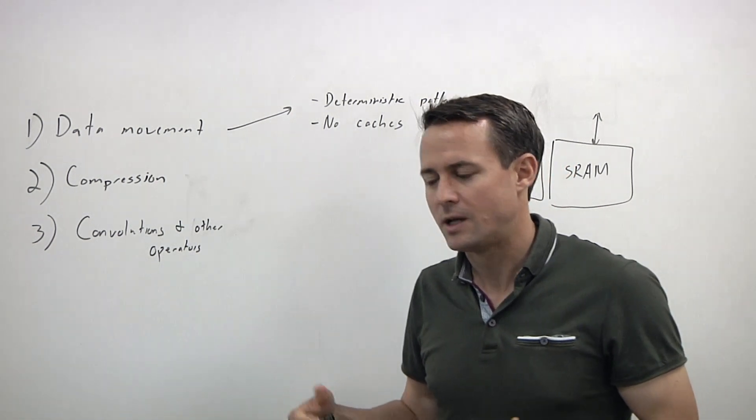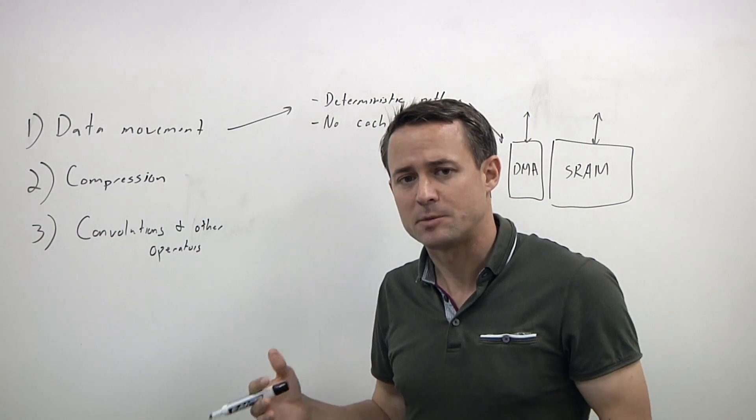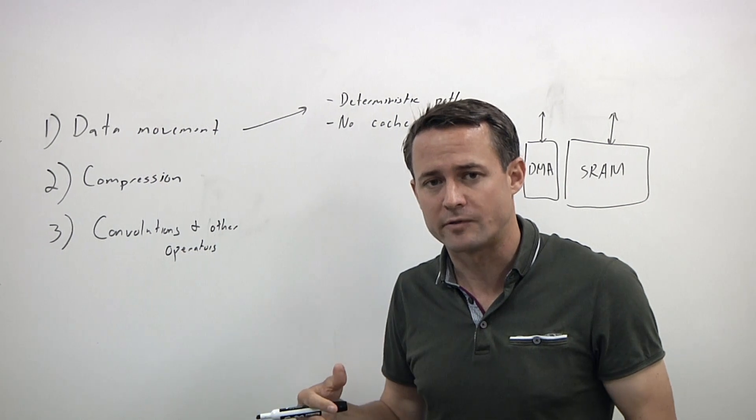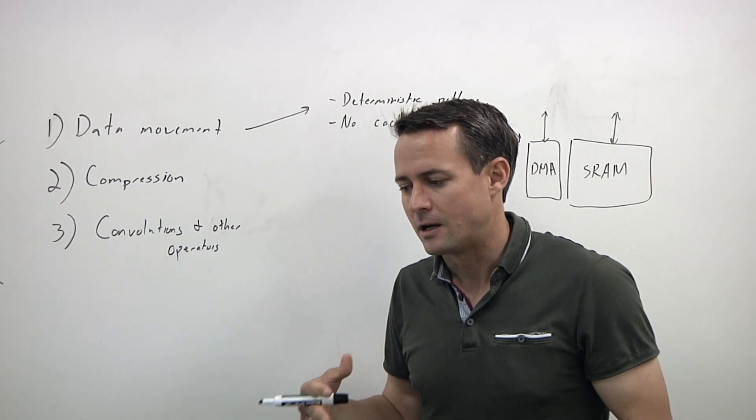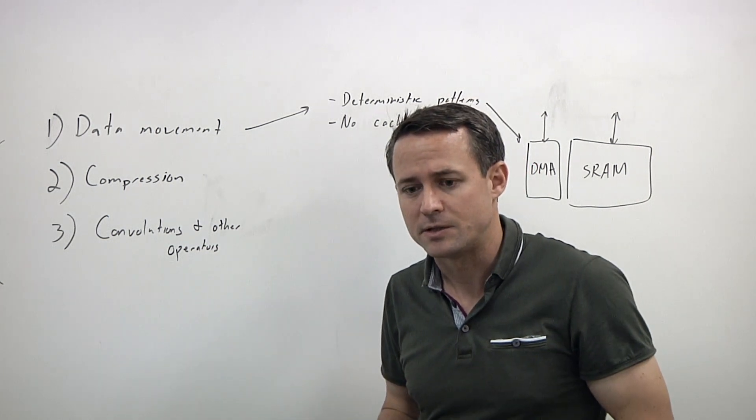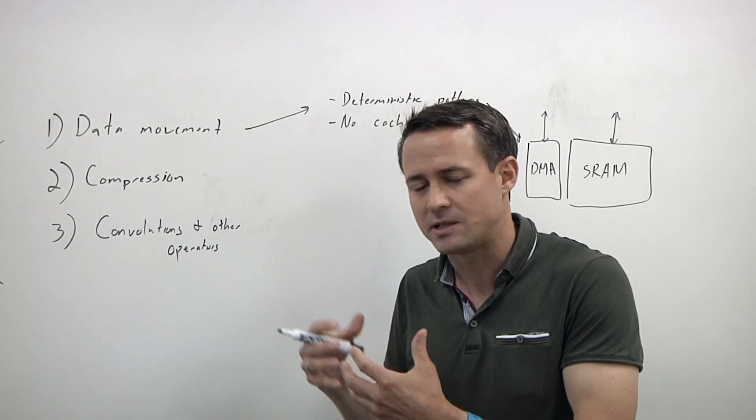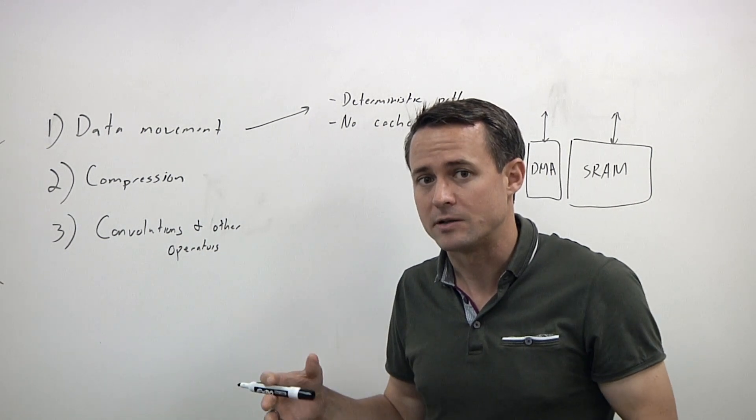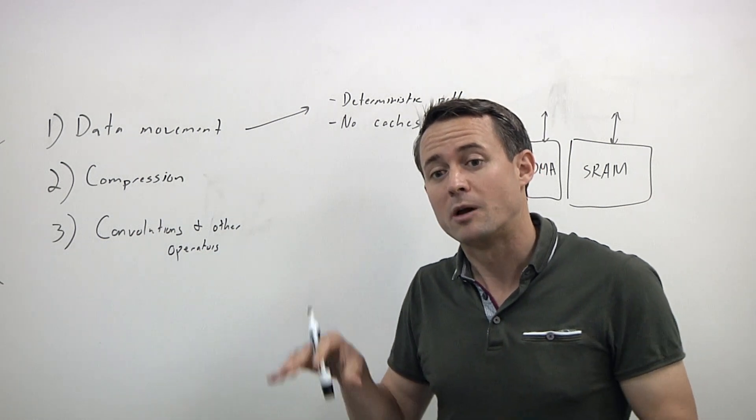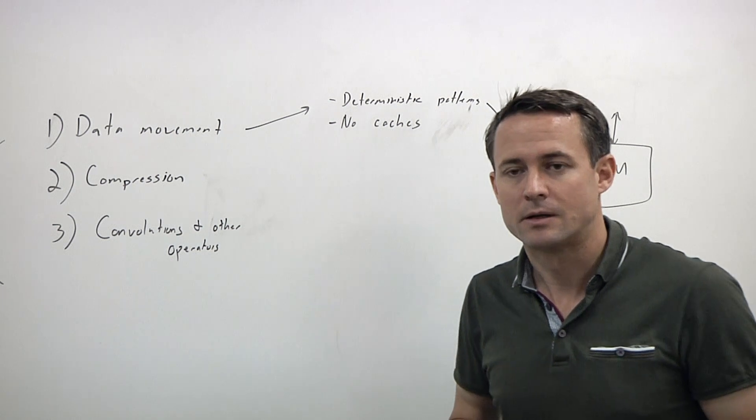Within ARM, we have a very successful GPU line, the Mali GPU line, and we have a lot of experience around compression technologies because compression technologies are very common in the GPU space. Similarly, you want to have compression technologies in your NPU, but the data patterns look different than what you might see in a GPU or in other areas. You really need to design compression technologies from the ground up for machine learning data.